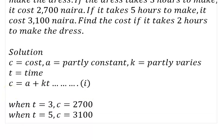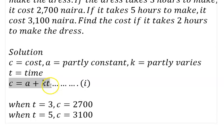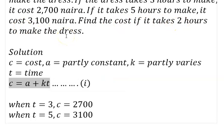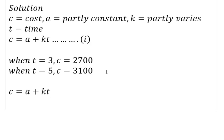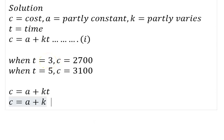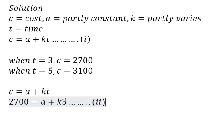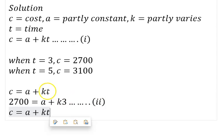The second piece of information: if it takes 5 hours to make the dress, the cost is 3,100 naira. Substituting T = 5 and C = 3,100 gives us: 3100 = a + 5k. We'll call this Equation 3. Now we can solve Equations 2 and 3 simultaneously to find the values of a and k.